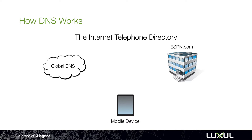First let's go over a quick review of how DNS works. Remember that the internet does not work on names, rather it works on numbers. But we as people generally remember names easier than numbers. So in this example let's use ESPN.com as a website. When ESPN got their domain name they actually registered with an IP address with the global DNS, which stands for domain name service. And all it really is is an address book. So ESPN.com is actually 75.23.55.7.